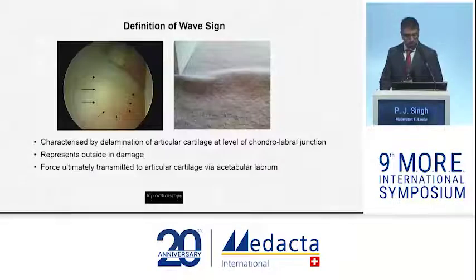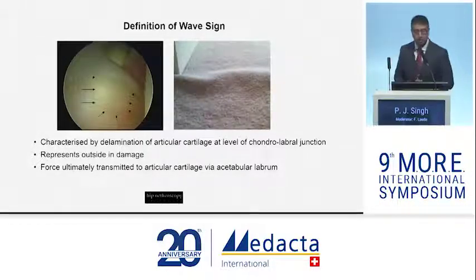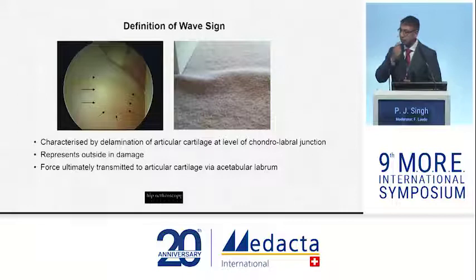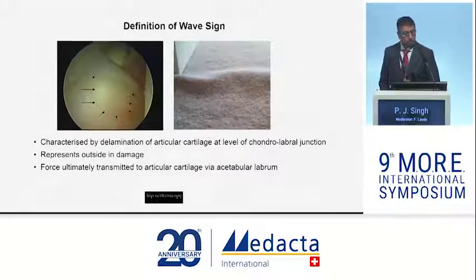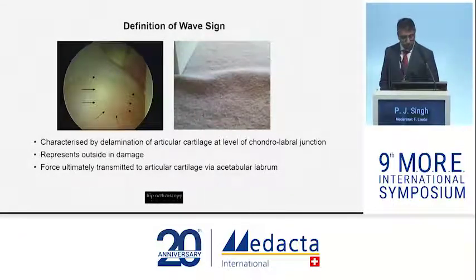My brief was to talk about the wave sign. This is characterised by delamination of the articular cartilage at the level of the chondrolabral junction. It represents outside-in damage typically caused by force to the articular cartilage via the acetabular labrum. We owe it to Martin Beck, who described it as a carpet lesion — I see it as a carpet bubble sign.